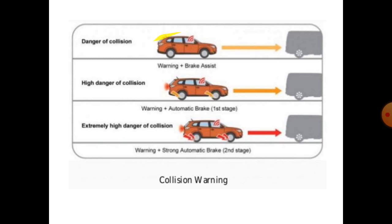From the figure you can see that one vehicle is traveling and another vehicle is in front — this shows a warning plus brake assist stage. In the first stage, the distance between the two vehicles decreases, requiring a warning and automatic brake signal. In an extremely high-danger stage where distance is very little, a strong automatic brake is compulsory, and a warning sound is heard by the driver.